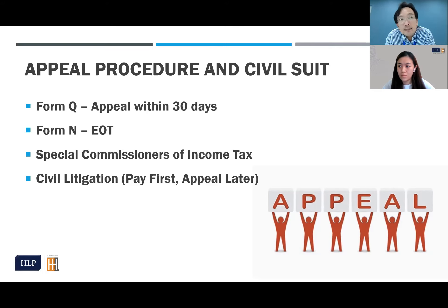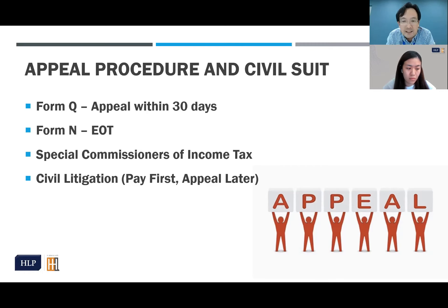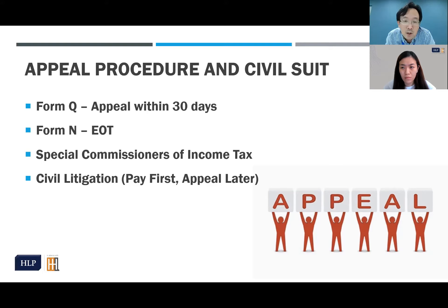After the 12 months, the appeal is referred to the Special Commissioners of Income Tax. The case management, preparation, and hearing before the Special Commissioners then proceed — but there is a very heavy backlog at the Special Commissioners Court. You will not be surprised that a hearing or trial of an appeal can take three to four years to be dealt with.